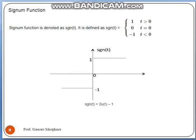The next signal is the signum function. The signum function has a value of +1 for t > 0 and a value of -1 for t < 0. At t=0 it is not clearly defined, but we can show it has a value of 0, since the value drops suddenly from +1 to -1. The equation of sgn(t) can be given as 2u(t) - 1. We will use this condition when calculating the Fourier transform.